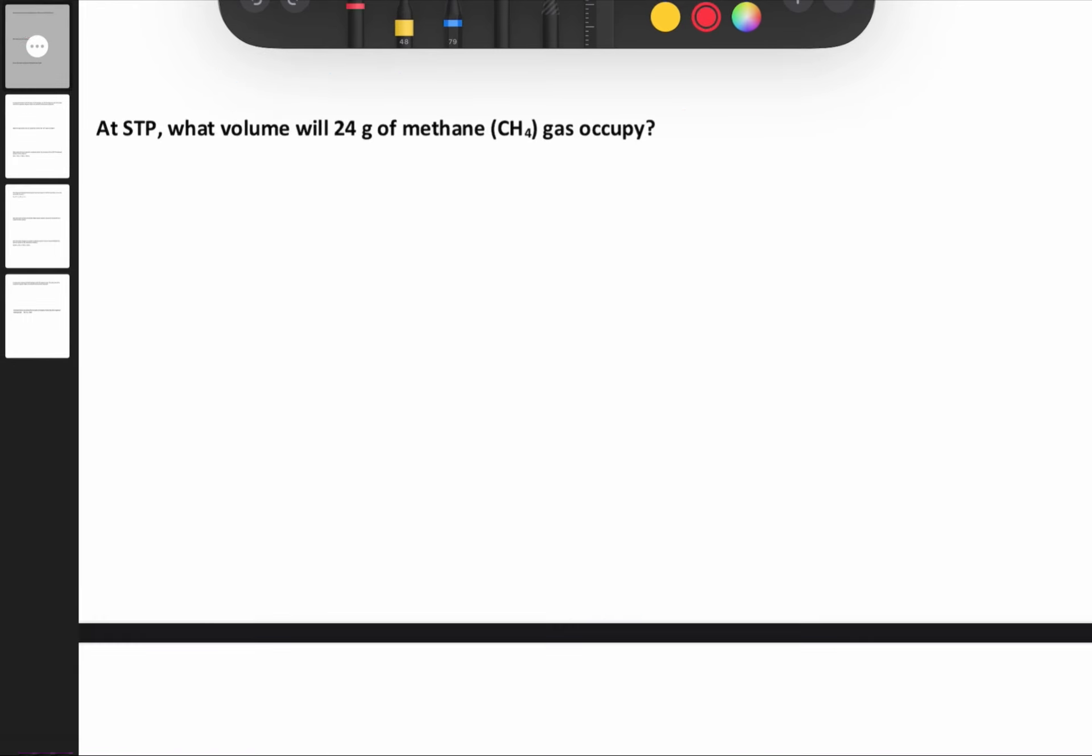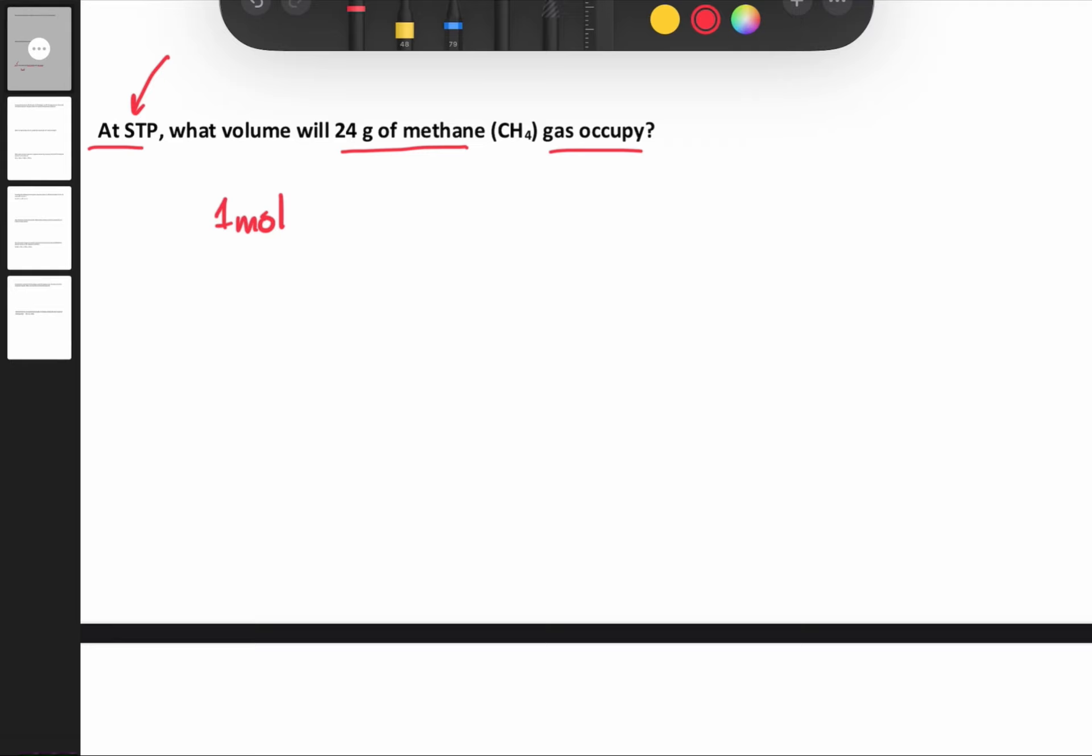Let's go to the second question. At STP, which means standard temperature and pressure, what volume will 24 grams of methane (CH4) gas occupy? The first thing you should remember: each one mole of any gas under standard temperature and pressure occupies a volume of 22.4 liters.